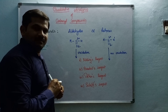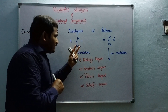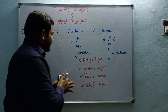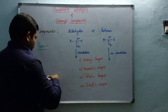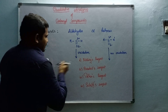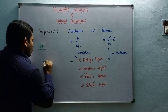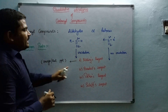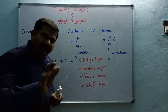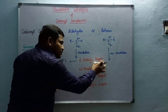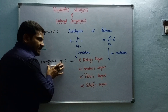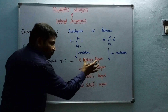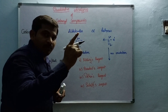Let us come to Fehling's reagent test. Add Fehling's reagent to your sample and keep it in a water bath for 10 minutes. If you get an orange or red color precipitate, that indicates your compound is an aldehyde. If you do not get any orange-red precipitate, that indicates your compound is a ketone, because ketones are not reactive with Fehling's reagent.